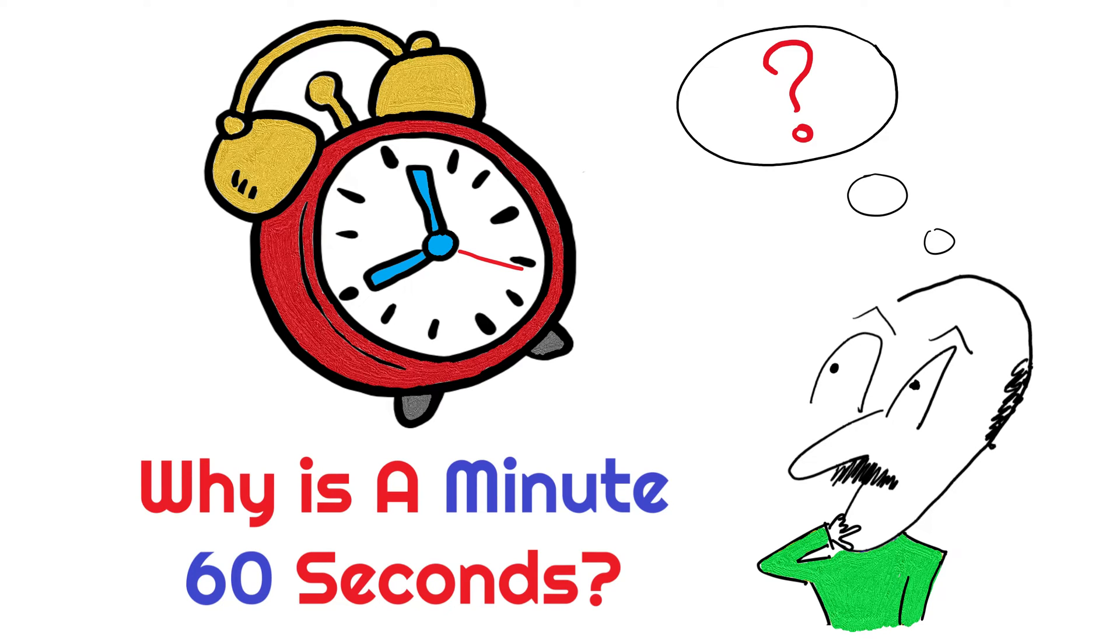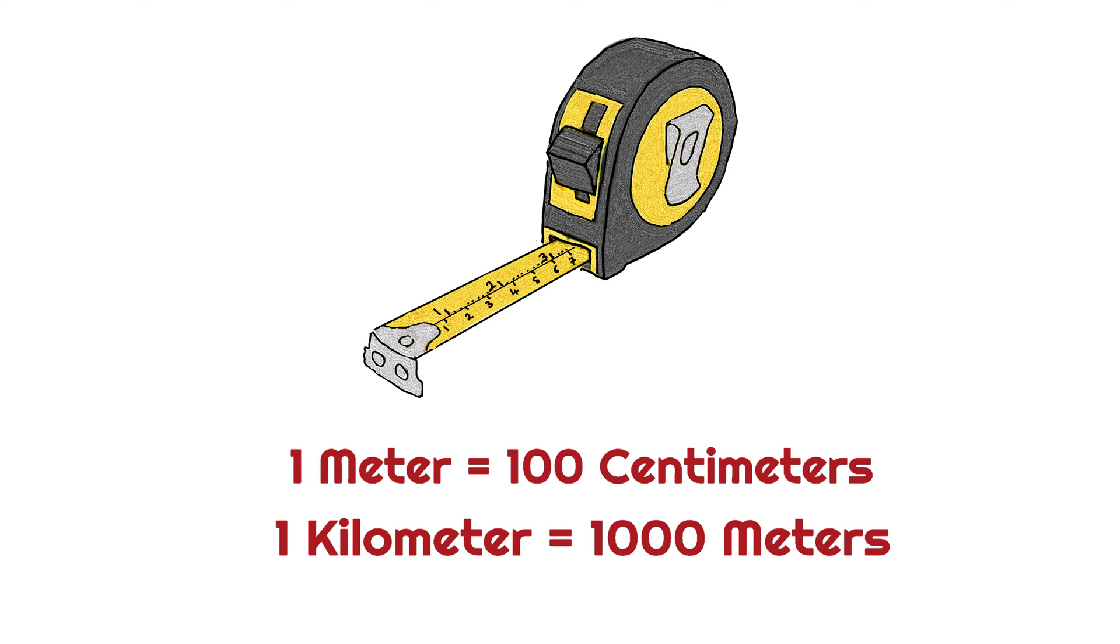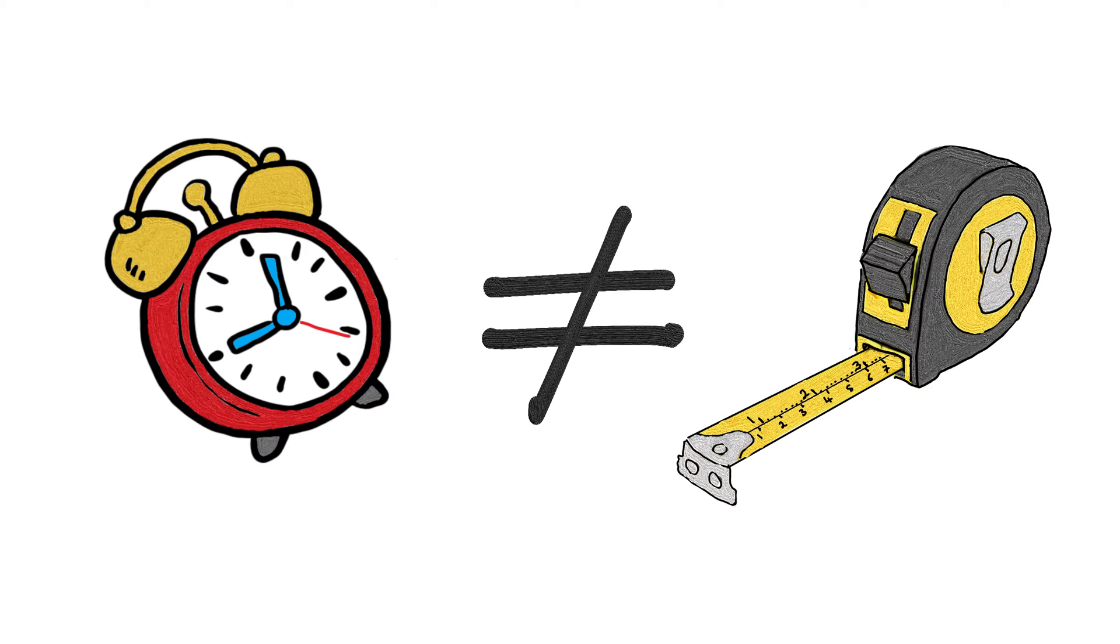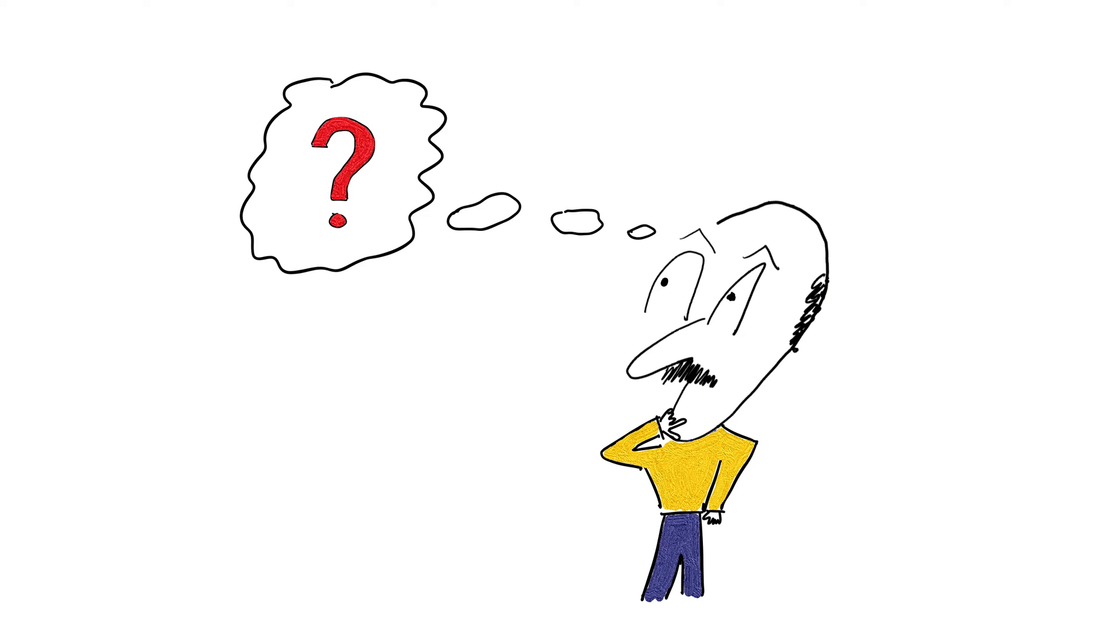Hello and welcome to the video where today we're going to talk about why is a minute 60 seconds. We live in a world where a meter is 100 centimeters or a kilometer is made up of a thousand meters and so on and so forth. However, it's not the same with how we measure our time.